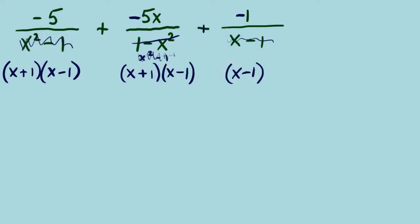Let's build the LCD. What factors will we need? x plus 1 — we see it once in the first, once in the second, and not in the third, so once is enough. And x minus 1 — we see it once in the first, once in the second, once in the third — a three-way tie — so once is enough. There is our LCD.